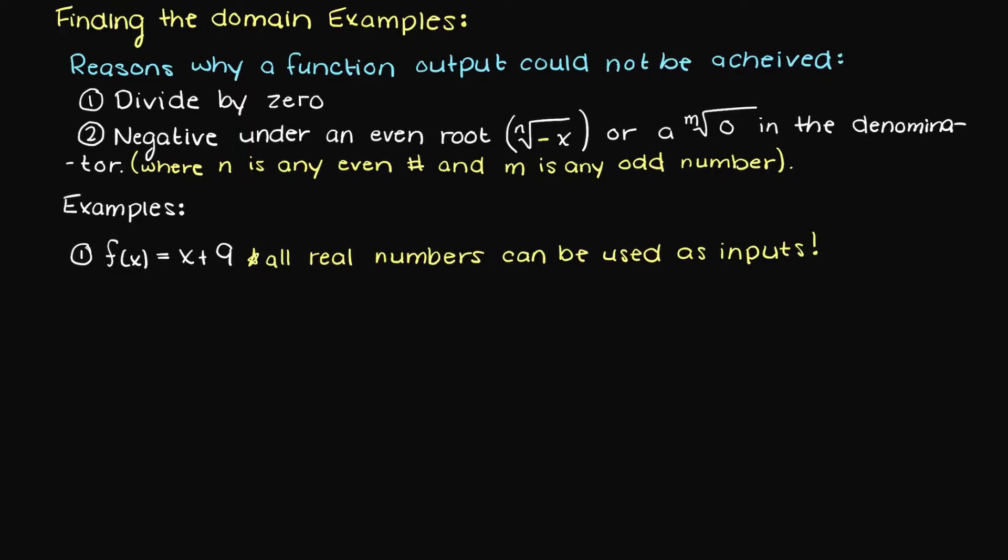Therefore, to express this domain in interval notation, we write capital D, colon, round bracket, negative infinity, comma, which means to, positive infinity, and end with another round bracket.